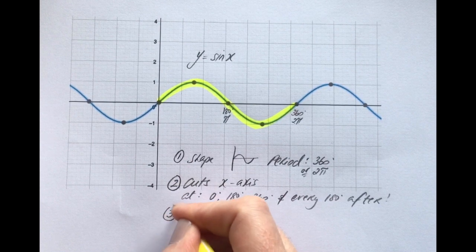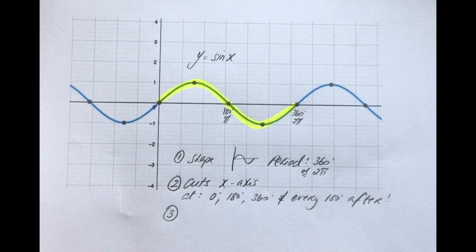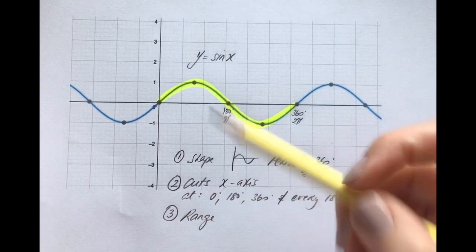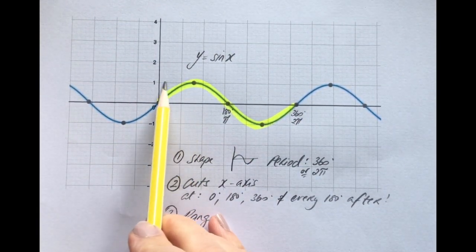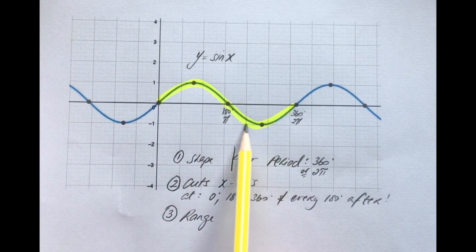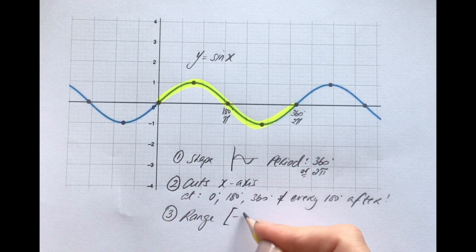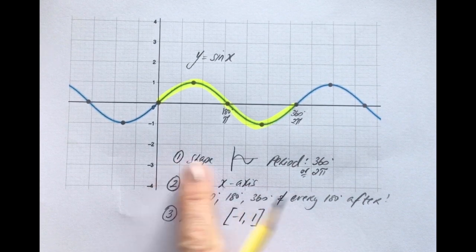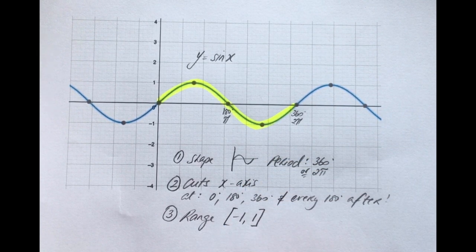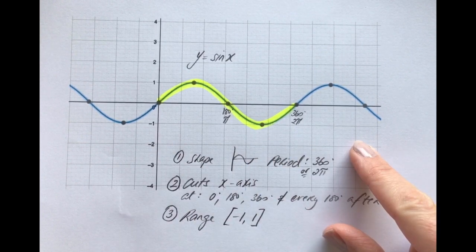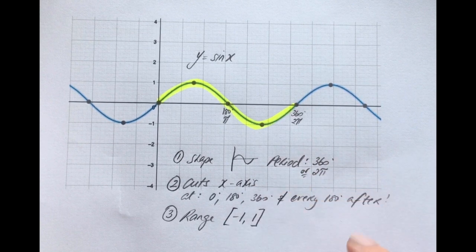The third and final point is the range — how far it goes up and down on the y-axis. The highest it goes is 1 and the lowest is minus 1, so the range is between minus 1 and 1. Once we're really familiar with the original sine curve, it becomes quite easy to make any transformation on it.